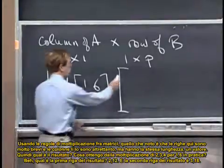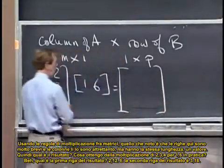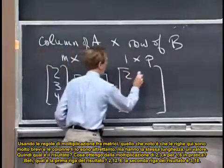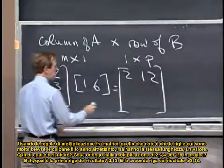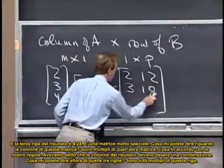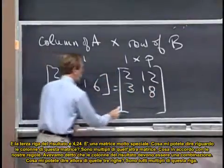Well, what's the first row of the answer? Two, twelve. And the second row of the answer is? Three, eighteen. And the third row of the answer is four, twenty-four.